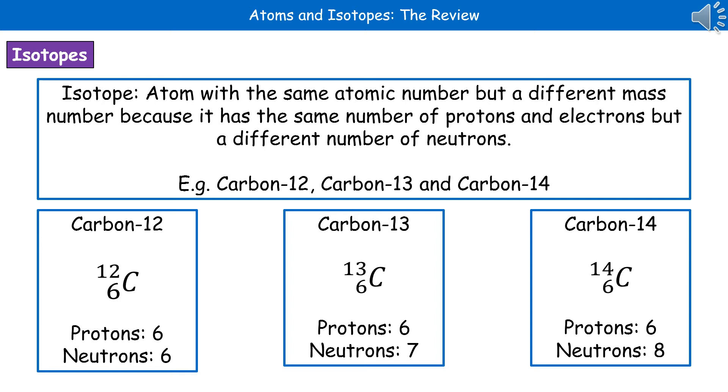So make sure you do remember the definition for an isotope there. The way we write them is as I've shown you in the middle there. So I've got three different isotopes of carbon: Carbon-12, carbon-13 and carbon-14.